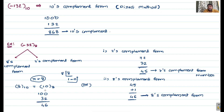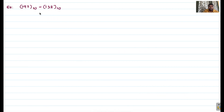This is about number systems and their complement forms. In most situations, we deal with binary number systems, so we use 1's complement and 2's complement. The 9's complement and 10's complement forms apply to the decimal number system.